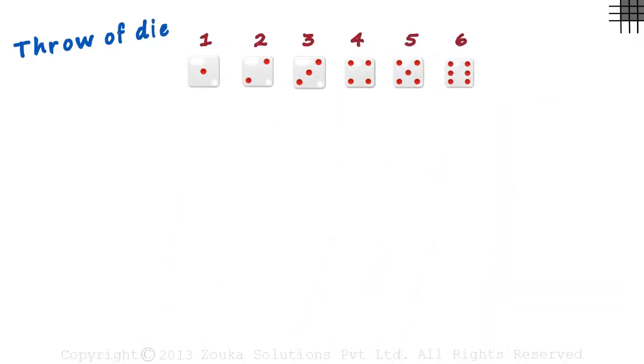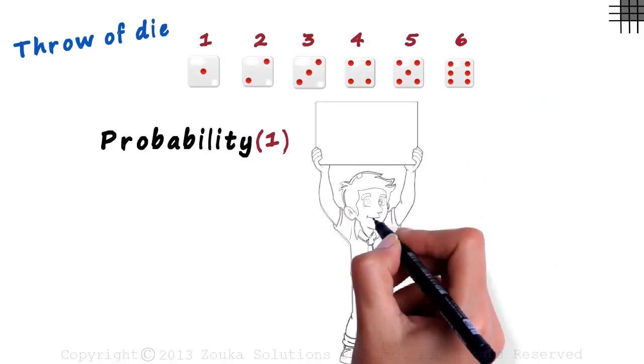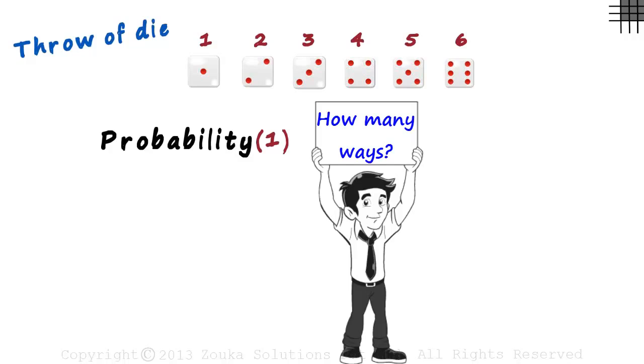Here's the first question. What is the probability of getting a 1? Remember, we need two things to find the probability. First, how many ways in which the event can occur? And second, what are the total possible outcomes?